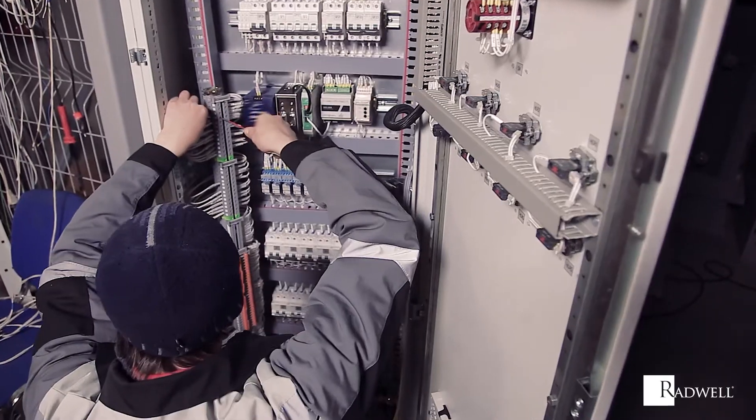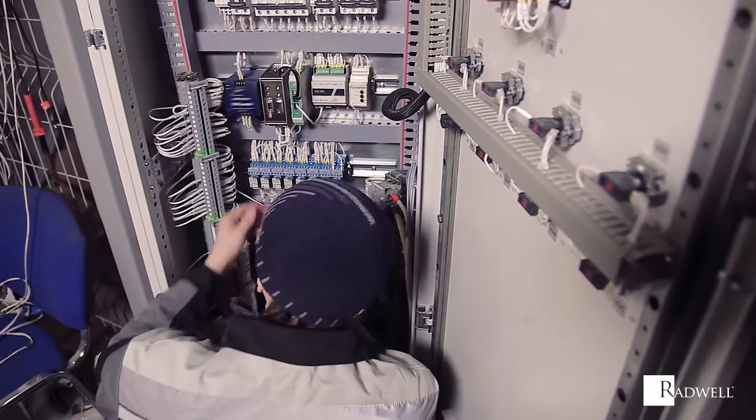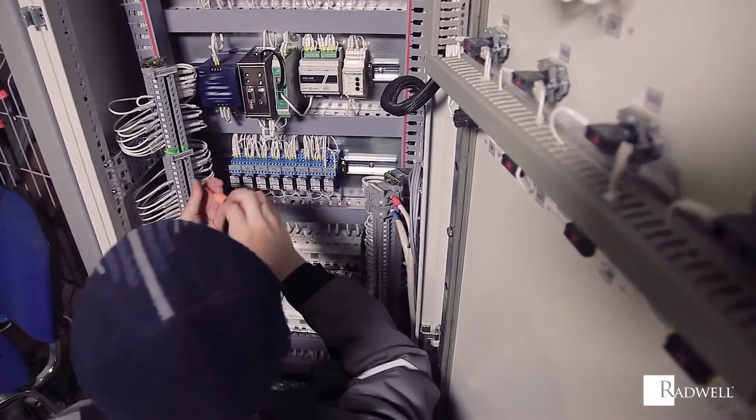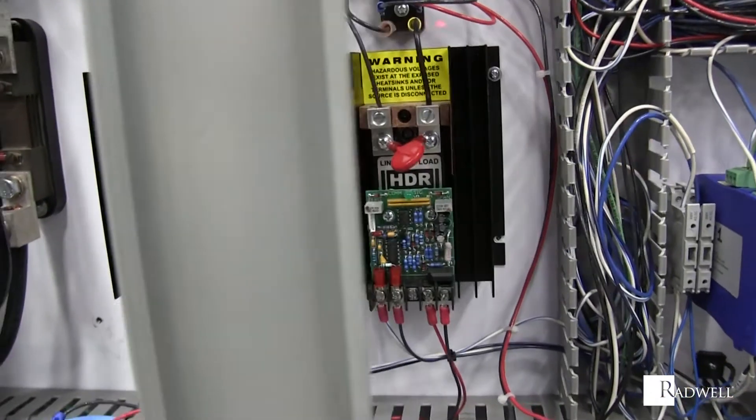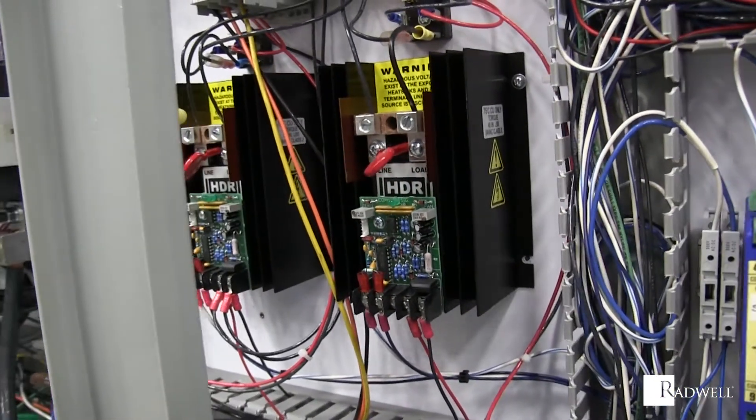Slotted wiring ducts are designed with slots or fingers along the side. This provides easier customizations, rerouting, and termination compared to their counterpart.